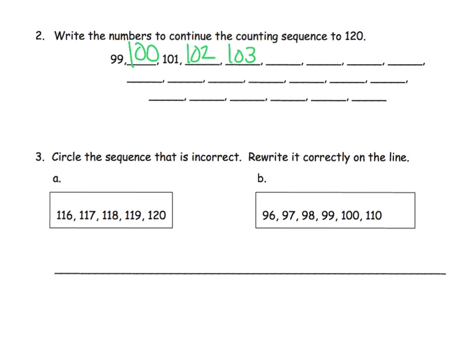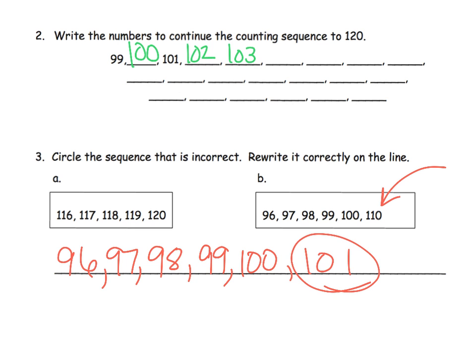Going down here, we're adding to the complexity. We have to figure out which one of these sequences is incorrect. 116, 117, 118, 119, 120. Well, everything seems fine right here. Let's take a look at B. 96, 97, 98, 99, 100. Oh, 110. What should have come next? Well, obviously, it should have been 101. So our job is to write it correctly. So let's do that. So it should have been 96, 97, 98, 99, 100, 101. So it should look like this, not like that.